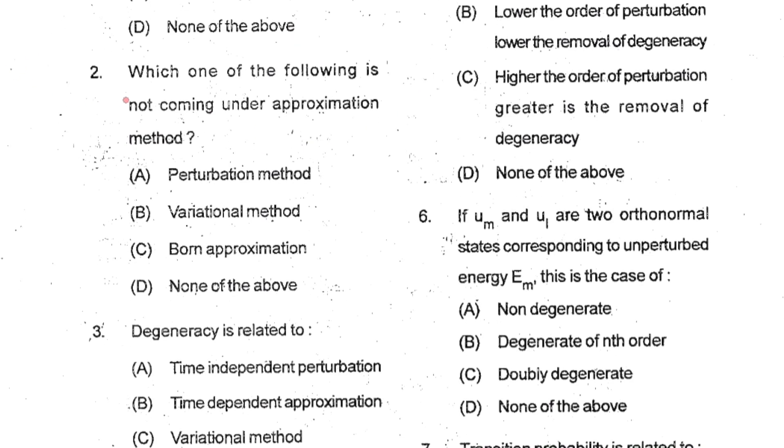Question number two: Which one of the following is not coming under approximation method? We know perturbation method is an approximation method, variational method is approximation method, WKB method is approximation method. But Born approximation is not an approximation method. So C is your correct option.